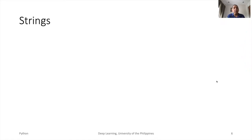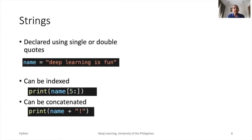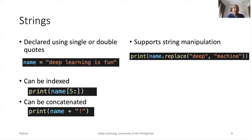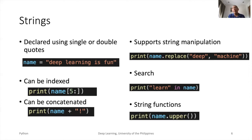After numbers, string is another data type that we process in AI. Specific fields such as natural language processing, optical character recognition, syntax recognition, and multimodal learning deal with text. Python has good support for text. Strings are values enclosed in single or double quotes. A string can be indexed, concatenated, manipulated like substring substitution, and we can search for a substring in a string. There are many other functions that support string manipulations, like converting a string to uppercase.